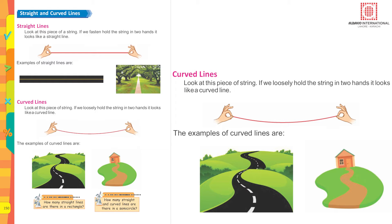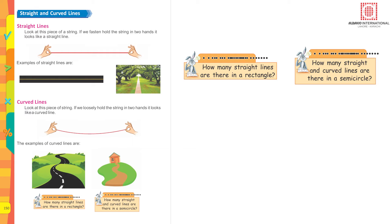The examples of curved lines are - you can look at the picture. Yes, the path is curved. It's not a straight line. Now coming to activity corner: How many straight lines are there in a rectangle?